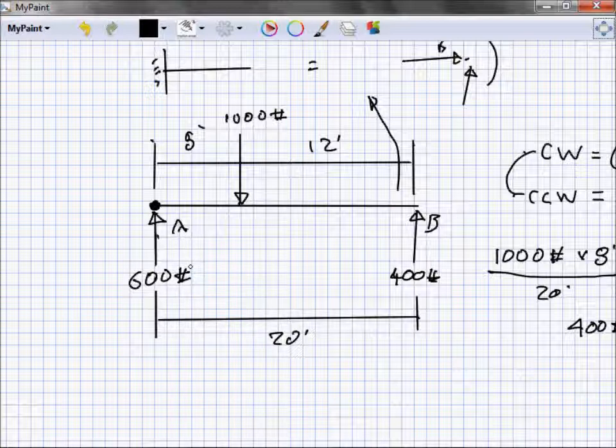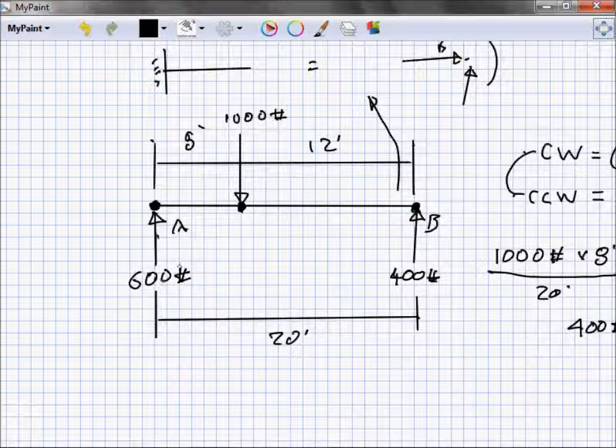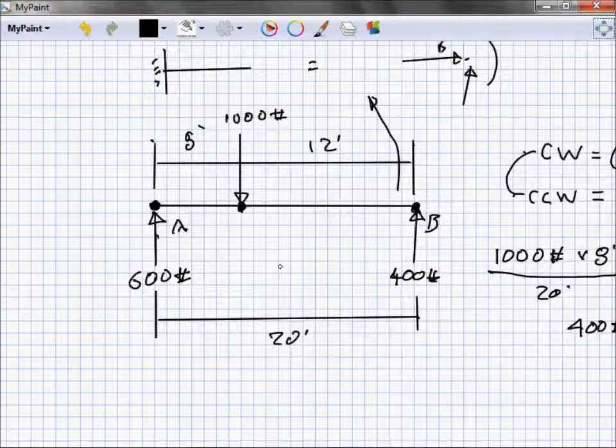Now is everything satisfied? Nothing's rotating around whatever point you pick. You can say 600 times 8 equals 400 times 12, or 1,000 times 12 equals 600 times 20. There's no horizontal load, I've got 1,000 pounds going down, 1,000 pounds coming up. Everything balances out, that's exactly what we want to do.